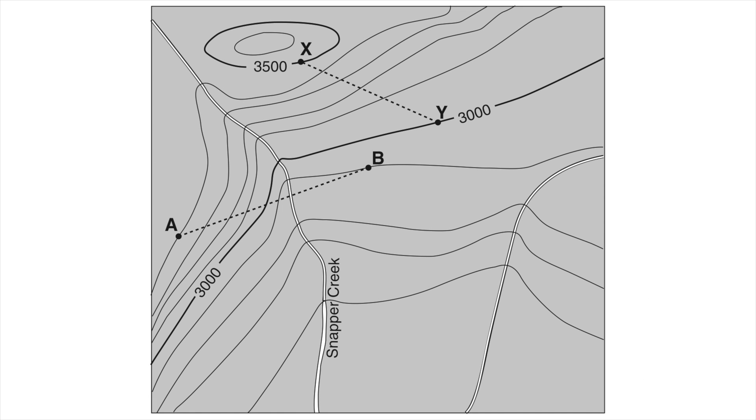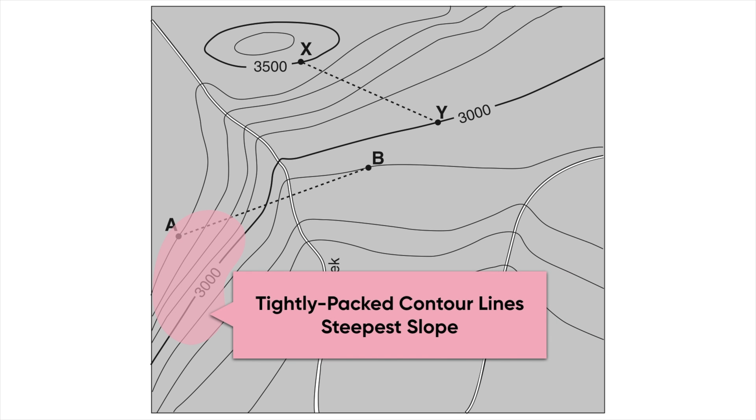So let's take a look at one more example of another topographic map here. So again, if I want to find the steepest slope, I'm looking for where my contour lines are tightly packed or very close together. So like this region over here is probably going to be the steepest part or one of the steepest parts of this area.